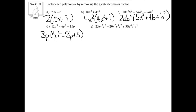E is a big one. We've got 25xy squared z to the power of 3 minus 20x squared y to the power of 4 z squared plus 30x to the power of 4 y squared z to the power of 5. Starting off with 25, 20, and 30 — the greatest common factor for these is going to be 5.